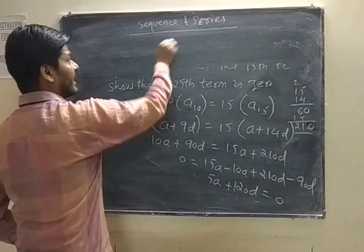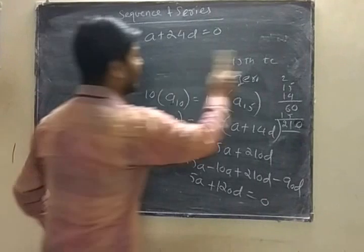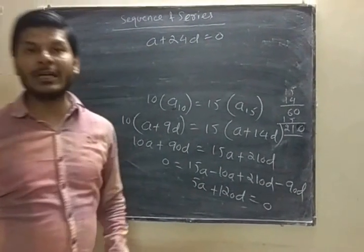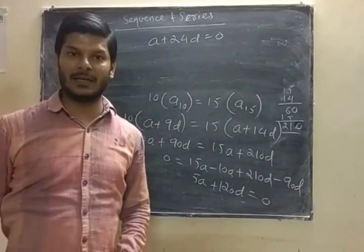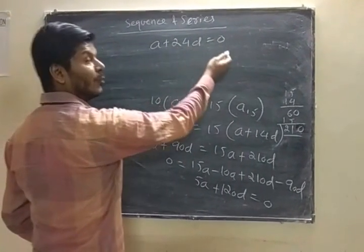I am going to prove that 25th term is zero. If you think 25th term, what do you write? We write a plus 24d.